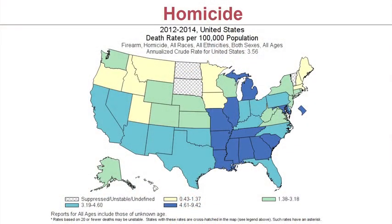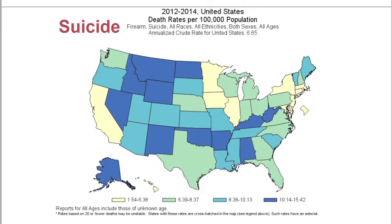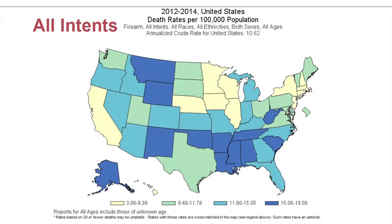Where are these deaths occurring? This map of the United States uses darker shadings to represent more gun deaths. For homicide, states in the Midwest and Southeast tend to have higher rates. For suicide, states in the Northwest and Midwest tend to have higher rates. But looking at all-cause gun deaths, there is no area of the United States spared — even the lowest states range between 3 and 9 deaths per 100,000.